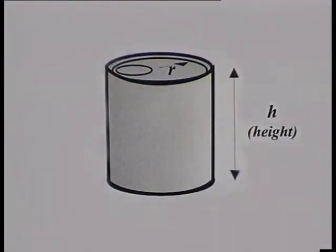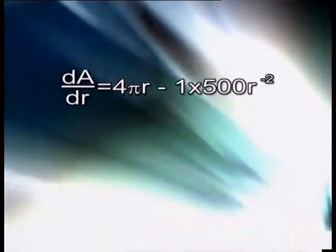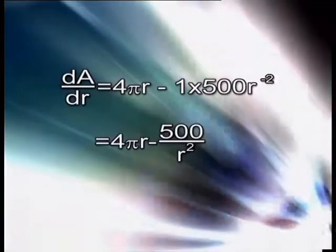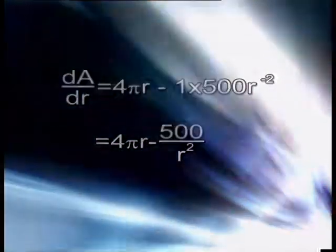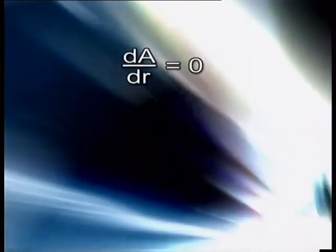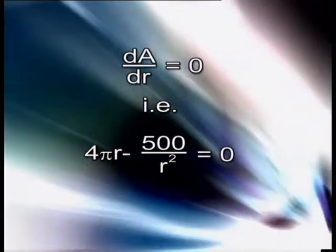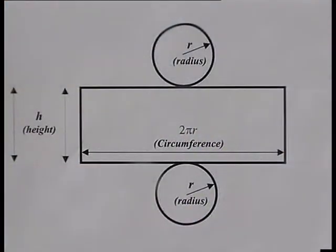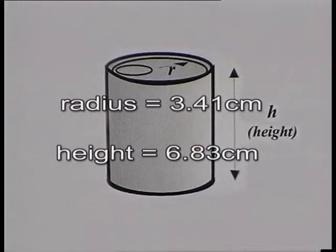Learners now have to differentiate to find a minimum value for the area of the can, using the 250 ml Mini Boost can as an example. If we differentiate, the turning point will be where the derivative equals zero. This is the point where the minimum amount of aluminium will be used for a given volume. For the Mini Boost can, this will be where the radius is 3.41 cm and the height is 6.83 cm.